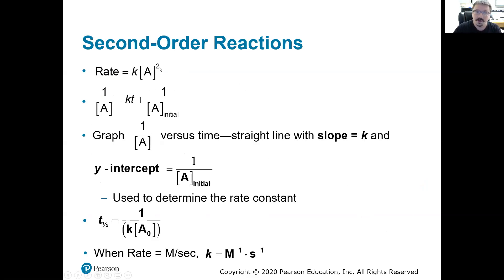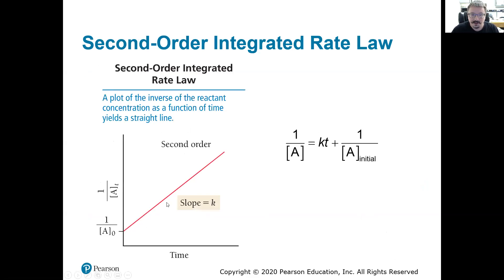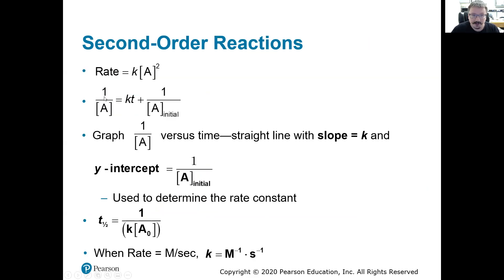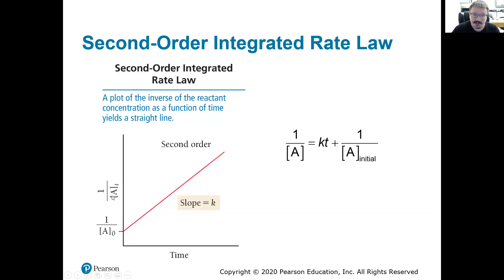Second order reaction. Now, we should see, as we change the concentration, we should see a much greater effect on the rate. Double the concentration, quadruple the rate. Triple the concentration, get a ninefold increase in the rate. So these plots here, we have to now plot, you'll see one over the concentration or the inverse of the concentration versus time. And if we do this, we get a straight line plot. And now we get a straight line plot with a positive slope. And that slope is equal to K, not negative K, but just K.